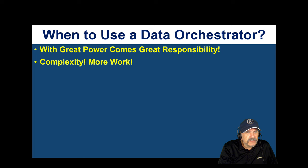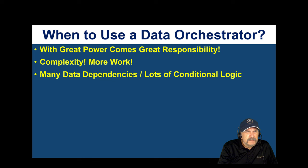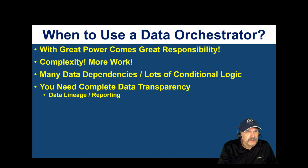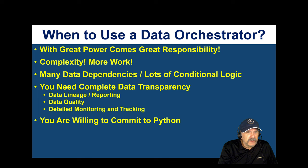If you have a lot of data dependencies to tie together, different scheduling cadences where some things refresh more often than others, and lots of conditional logic — if this happens then do this — that's when you may need data orchestration. You also need complete data transparency, especially if there are government regulations or auditing requirements. That means data lineage, reporting, data quality, and detailed monitoring: where did it go wrong, which table, which column.